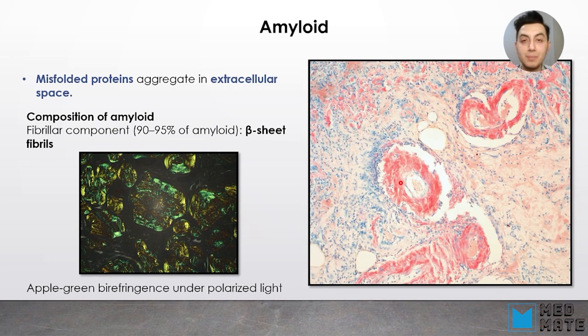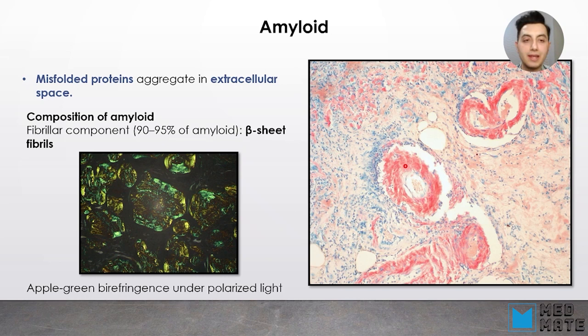Amyloids are misfolded proteins that aggregate in our extracellular space. They are not one single protein but rather multiple misfolded proteins. The composition of amyloids is 90 to 95% fibrillar components, which are beta-sheet fibrils. Their appearance is very distinct — they are well stained with Congo red staining and tend to accumulate around blood vessels. Another way to recognize amyloid is apple-green birefringence seen under polarized light.